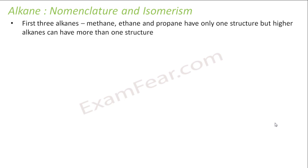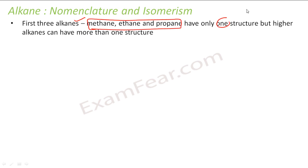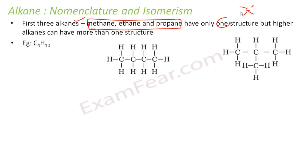Let's talk about the nomenclature and isomerism of alkanes. The first three alkanes — methane, ethane, and propane — have only one possible structure each. You cannot have isomerism for methane. Similarly with ethane and propane you can develop only one structure. But as you go higher — butane, pentane, hexane — you can have more than one structure.